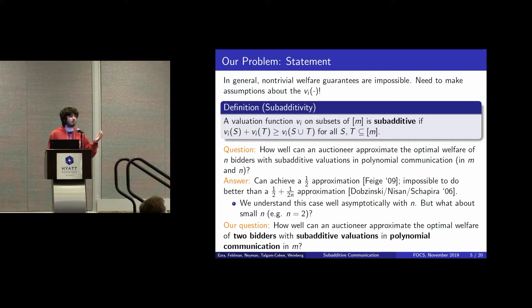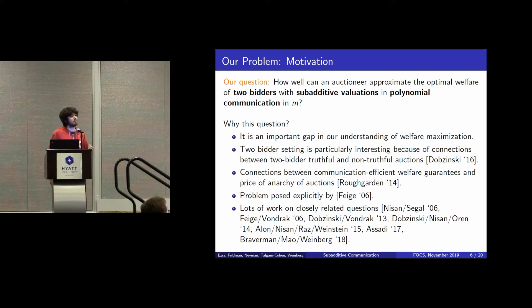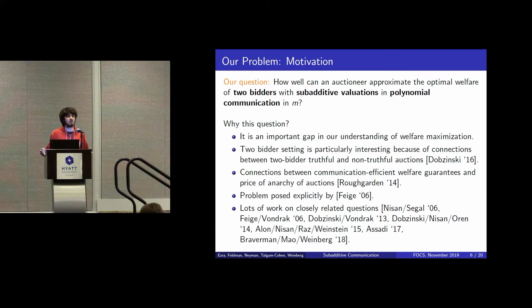Why specifically two bidders? It is an important gap in our understanding of welfare maximization. The two-bidder case is theoretically interesting for several reasons, including a connection observed by Shahar Dubzynski between truthful auctions and simultaneous non-truthful auctions specifically in the two-bidder case, and also a connection to the price of anarchy of auctions.